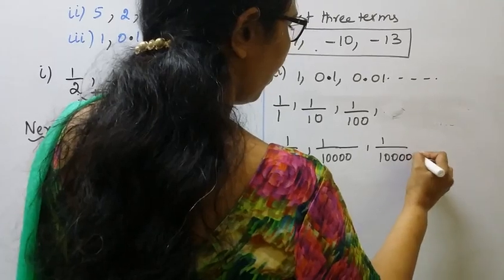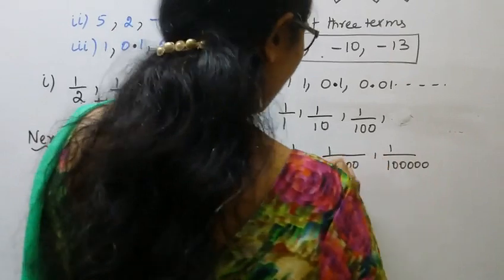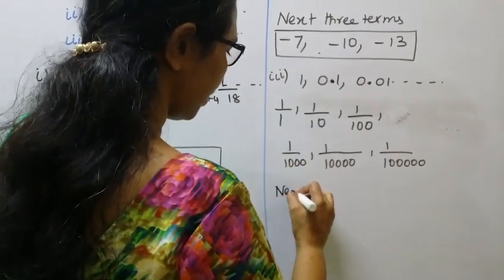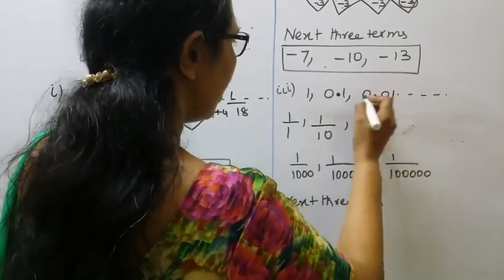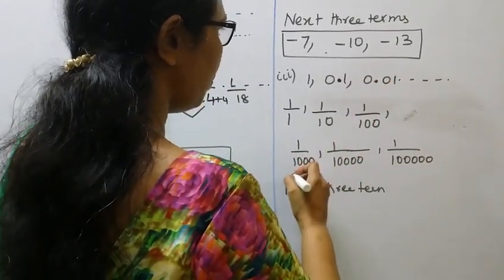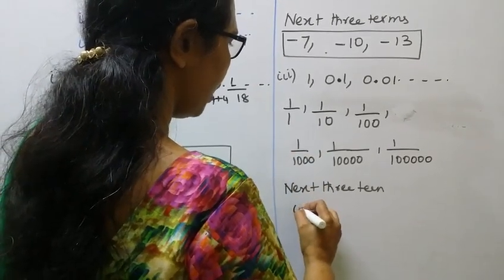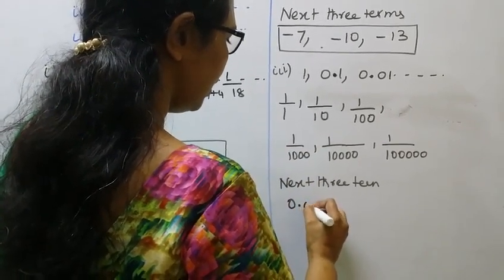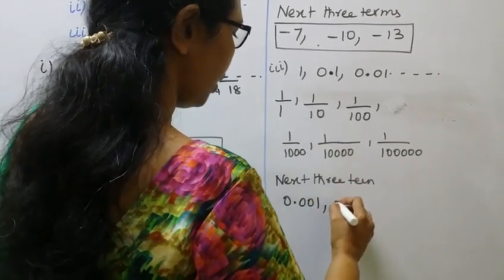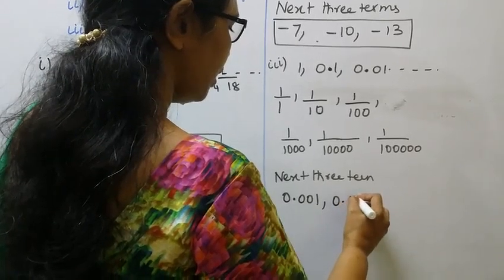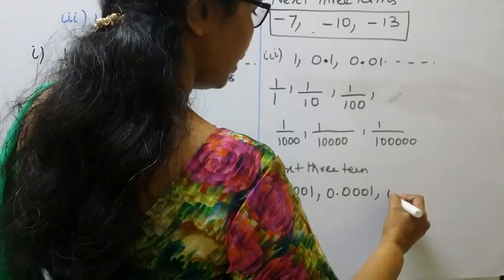The next three terms are: 1/1000 which is 0.001, then 1/10000 which is 0.0001, then 1/100000 which is 0.00001. Those are the next 3 terms for the third subdivision.